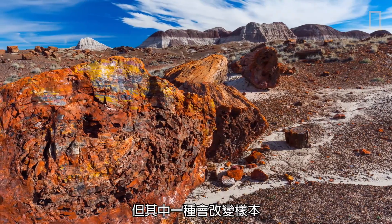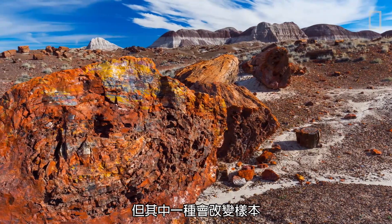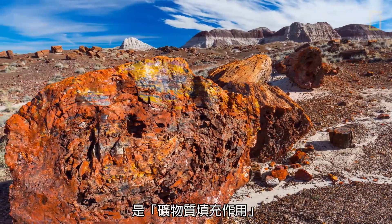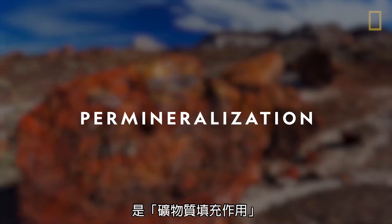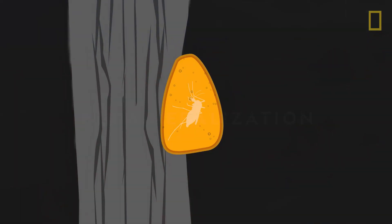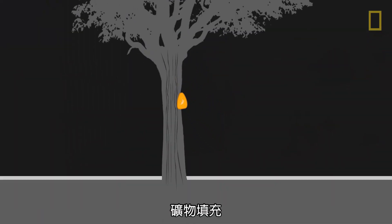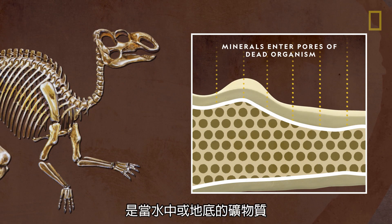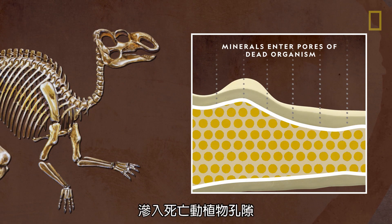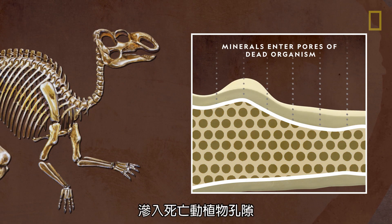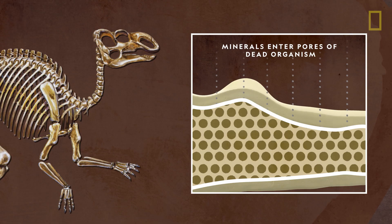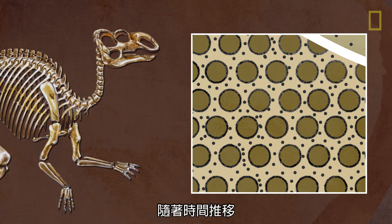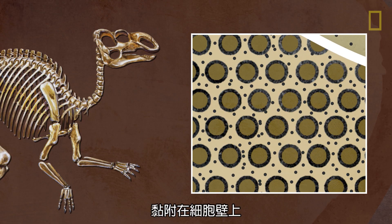But one of the most common types of fossilization that changes a specimen is called permineralization. Permineralization begins when minerals from water or the ground enter the pores of dead plant or animal material. Over time, the minerals attach themselves,